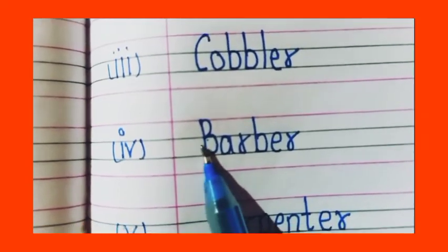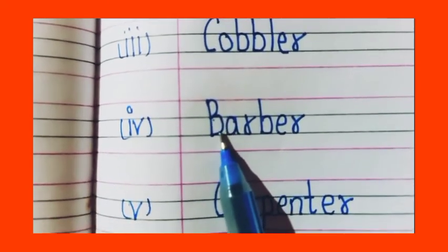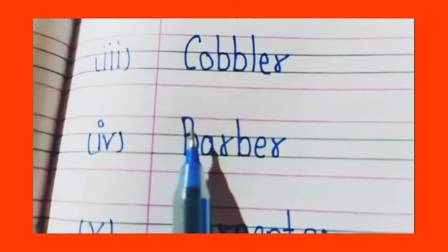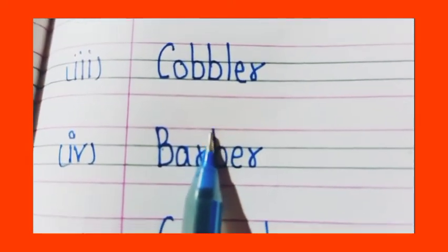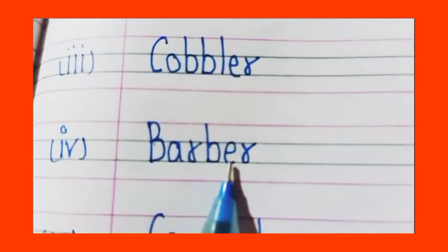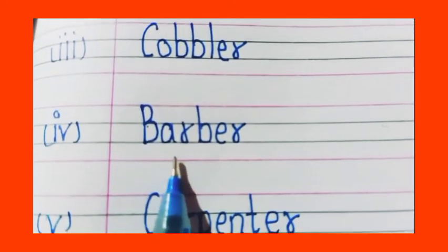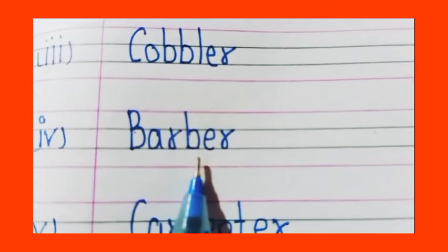Next is barber. What is the spelling of barber? First you make capital B, then A, then R, then B, E, R, barber, okay? B-A-R-B-E-R, barber.